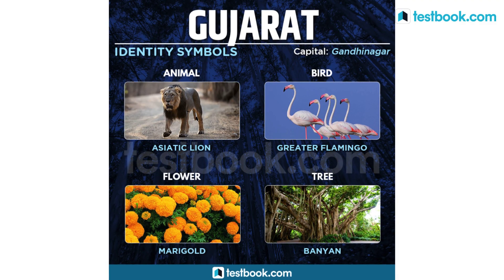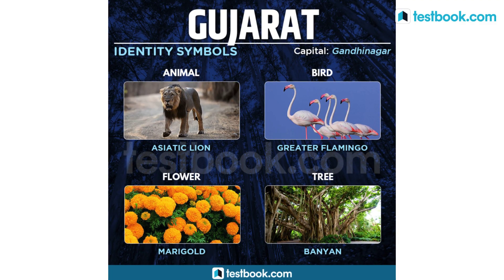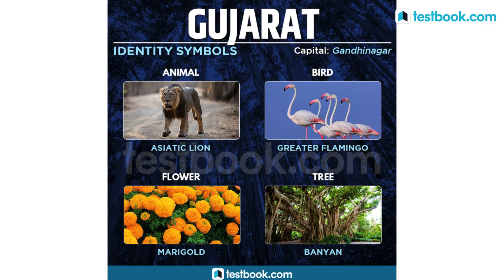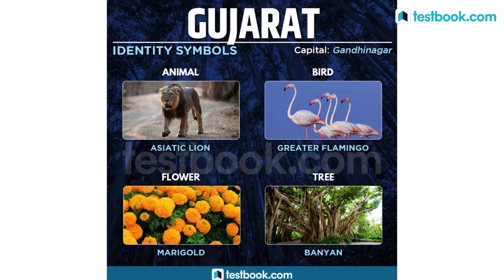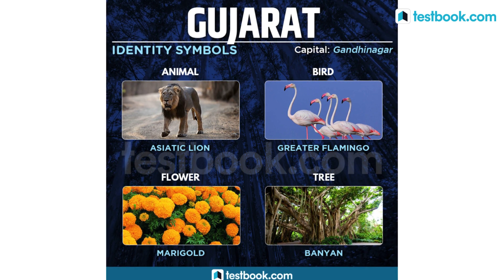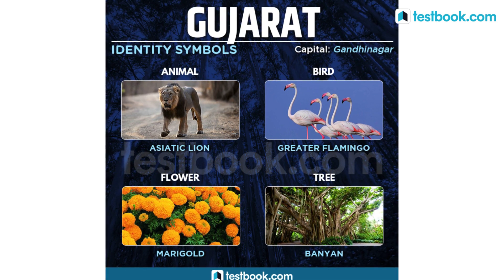Gujarat's state animal is Asiatic Lion, state bird is Greater Flamingo, state flower is Marigold and state tree is Banyan.